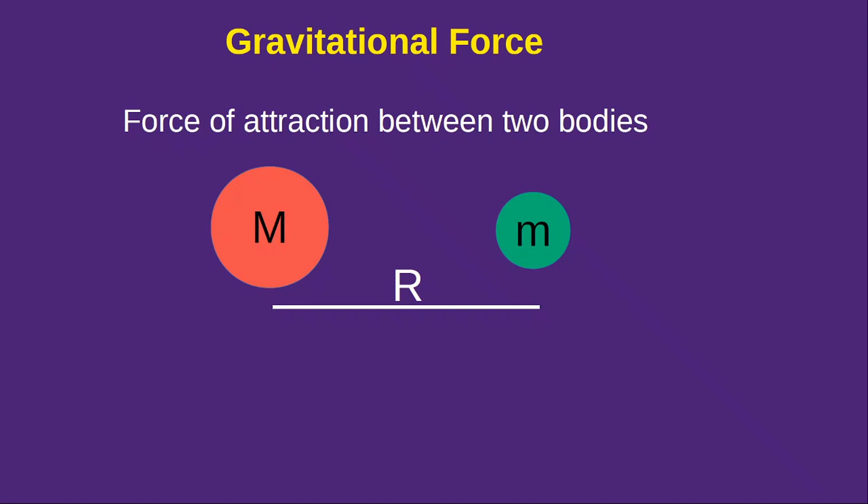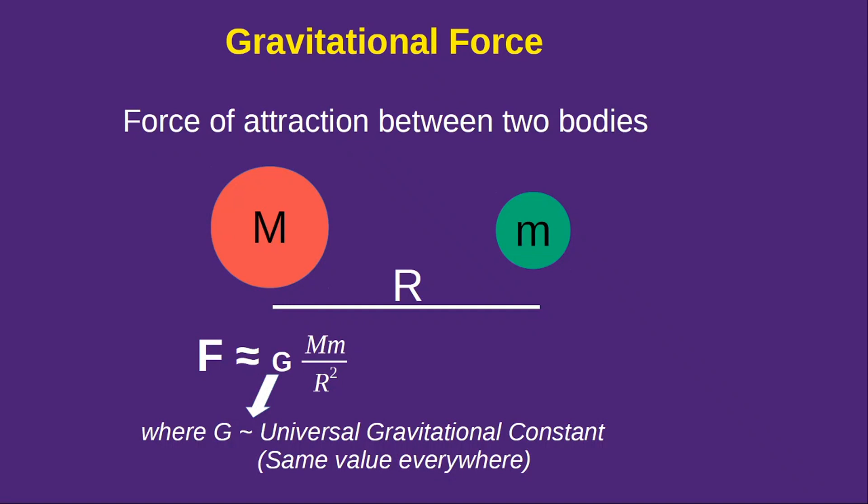So if we consider two bodies of mass capital M and small m separated by a distance r, then this gravitational force between these two bodies can be given by g mm by r squared. Where g is the universal gravitational constant and the value of this g remains same everywhere in this universe.